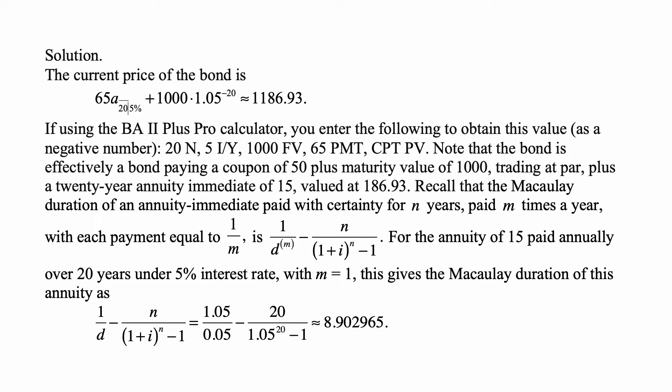Note that the bond is effectively a bond paying a coupon of 50 plus maturity value of 1,000 trading at par, plus a 20-year annuity immediate of 15 valued at 186.93. You can see that immediately because, of course, if there was a 5% coupon, the price would be 1,000.